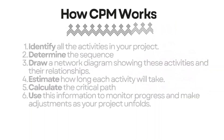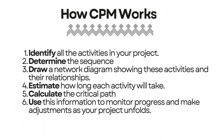So how does CPM work? The critical path method works in six simple steps. Firstly, the identification of all the activities in your project. Secondly, the determination of the sequence. Thirdly, the drawing of a network diagram showing the activities and their relationships. Fourthly, estimating how long each activity will take. Then calculating the critical path. And lastly, using this information to monitor progress and make adjustments as your project unfolds.